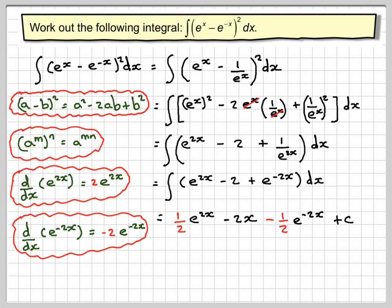Plus c. There is a common factor of a half which will make that a 4. So we get 1/2 times e to the 2x minus 4x minus e to the minus 2x plus c.